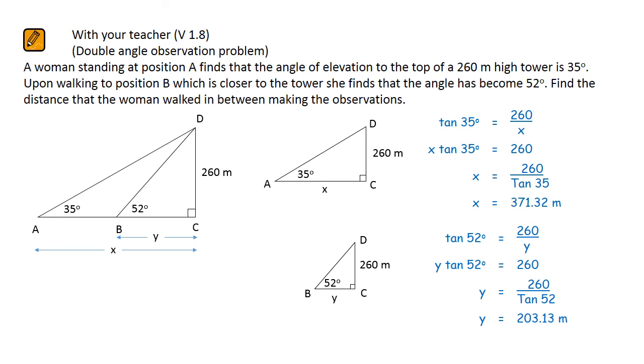To work out the distance from A to B, all we need to do is take away one answer from the other. The distance is 168.18 metres.